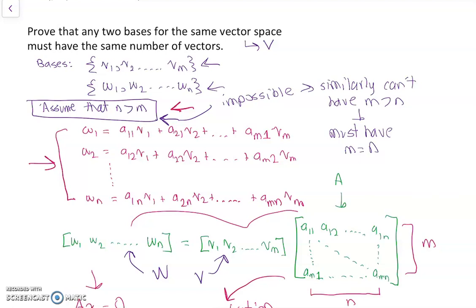So it means that any two bases you choose must have the same number of vectors. And this completes the proof. Okay. So, hope you enjoyed this proof. Thanks for watching, and I'll see you next time.